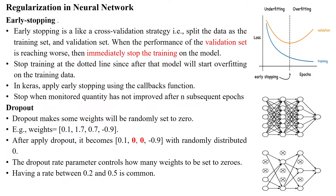The first one is early stopping. Early stopping is like a cross-validation strategy, which splits the data into a training set and a validation dataset. When the performance of the validation dataset is getting worse, we immediately stop the training of the model.